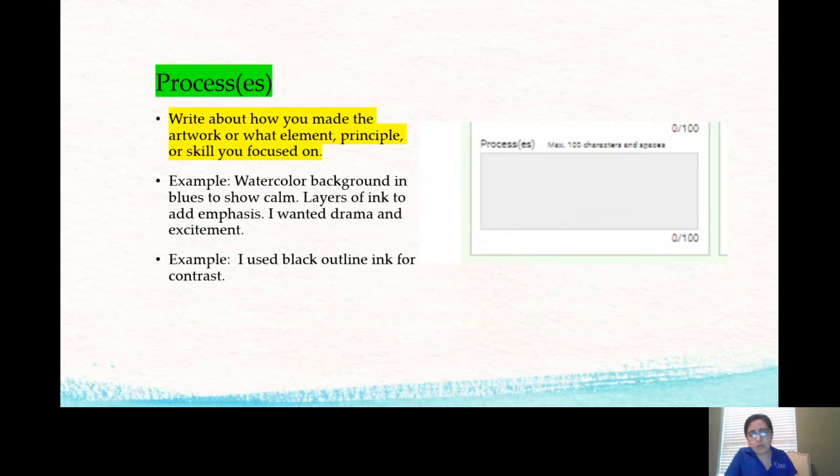So process guys, what is it? What do you need to write about? You will write about how you made the artwork or what element, principle or skill you focused on. So it's going to be what helped you create the artwork. So I gave an example here. I gave two examples. One example was watercolor background and blues to show calm, layers of ink to add emphasis. I wanted drama and excitement. Remember only a hundred characters, so I tried to narrow it down. Then there's another example that's even smaller: I use black outline ink for contrast. So as simple as that, bringing your ideas, elements and principles or skills that you focused on. That is the process.